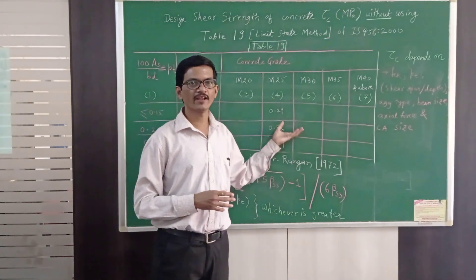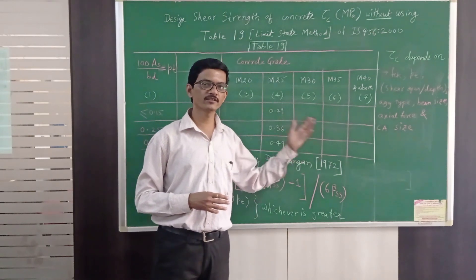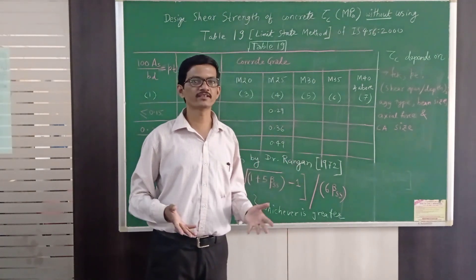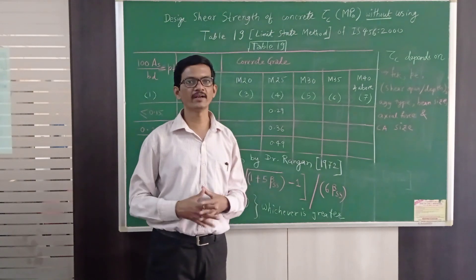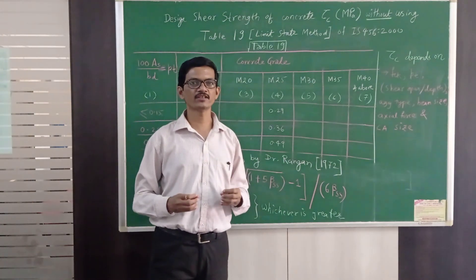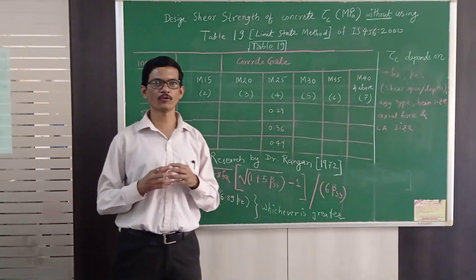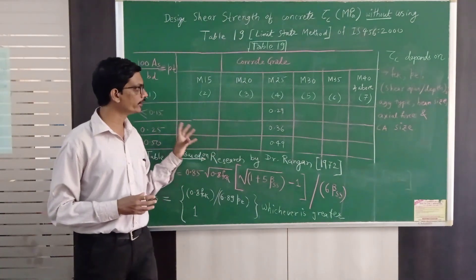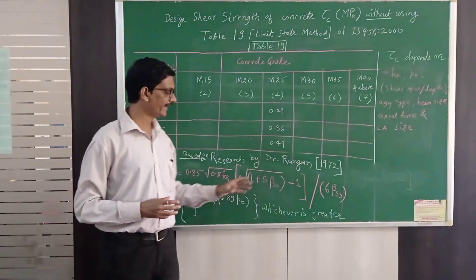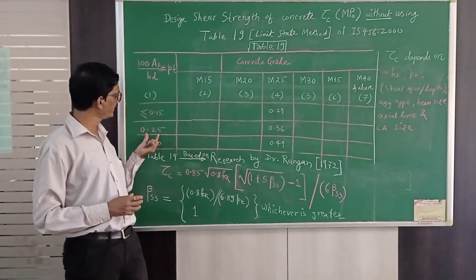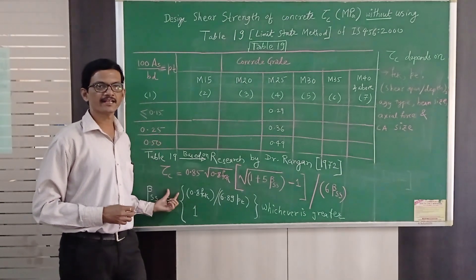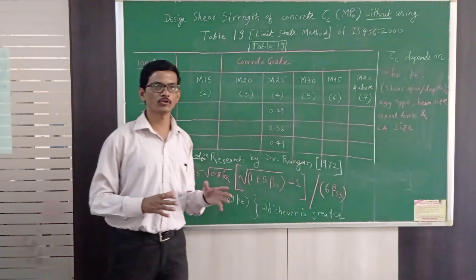It is always flexural shear or there are other things which are associated with that which I do not want to discuss here because that is beyond scope of my discussion here. I want to culminate just by finally saying that students do not need to use this table. They can directly remember these two formulae and for any random value of Pt they can directly arrive at tau c. Thank you very much.